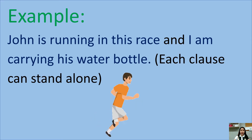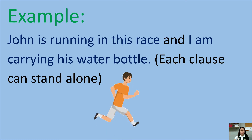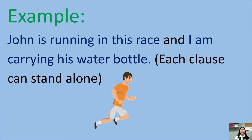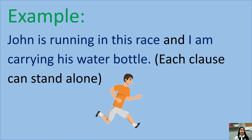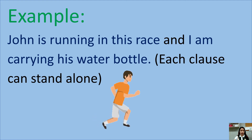Example: 'John is running in this race, and I am carrying his water bottle.' This example uses independent clauses. An independent clause can stand alone — it is a complete sentence. It is most effective when used to create a sense of balance or contrast between two or more equally important pieces of information. Each clause can stand alone, and you add 'and' to connect or combine them.